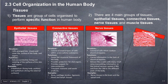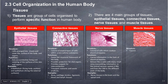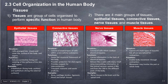Muscle tissues — structure: consist of three main types of muscles, all specialized for contraction. Functions: enable body movement through contraction; movement may involve part or the whole body, and along a tube within it. Examples: smooth muscles, skeletal muscles, and cardiac muscles.